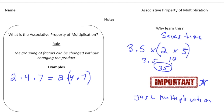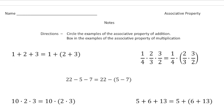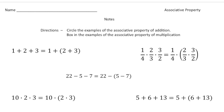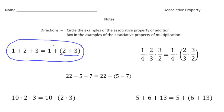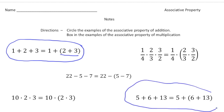Let's do a few more problems together. We're going to identify the associative property of addition by circling the equations, and box in examples of the associative property of multiplication. Here we have 1 plus 2 plus 3 equals 1 plus 2 plus 3 — the order didn't change, parentheses were just added — so that's the associative property of addition. Similarly, 5 plus 6 plus 13 equals 5 plus 6 plus 13, with parentheses added to the 6 and 13 — also associative property of addition.